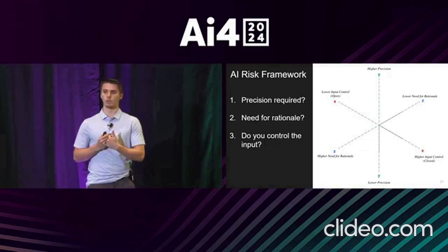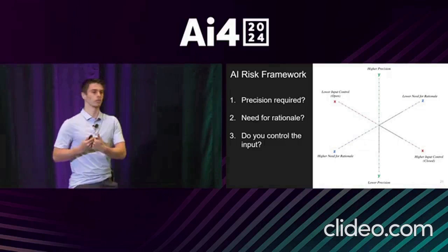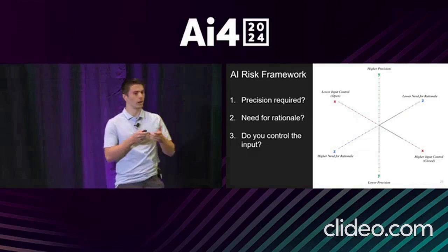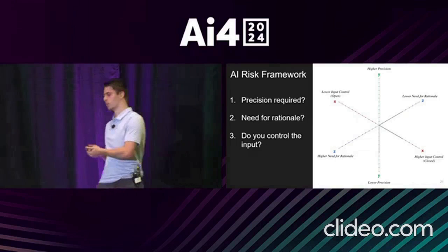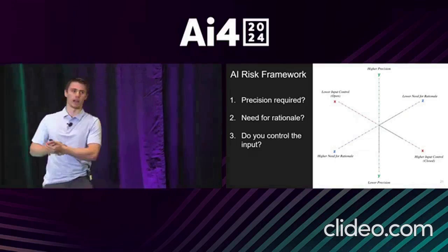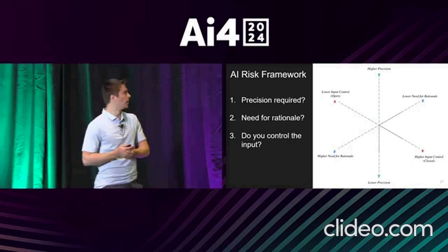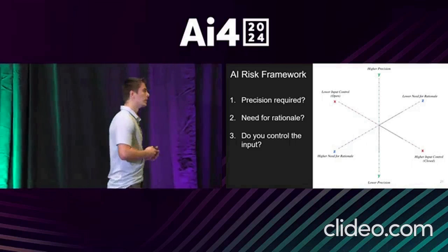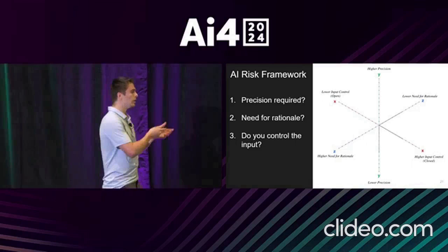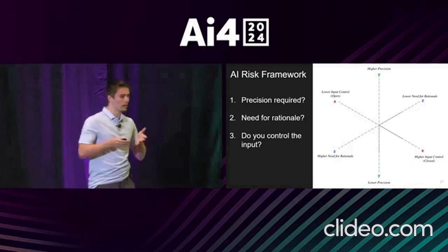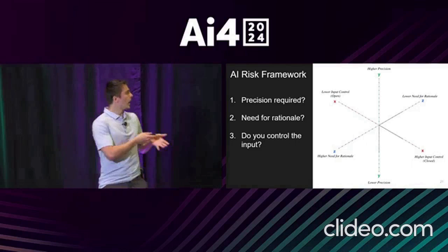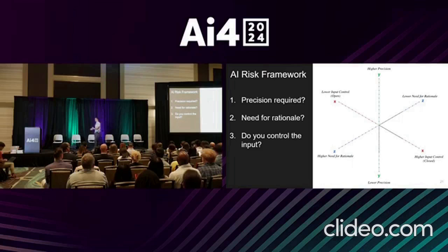Given the bizarre nature of AI, how do we decide when are the good use cases and when are the bad use cases? In our book, The AI Conundrum, we developed this risk framework. It has three axes which correspond to three basic questions you should ask when applying AI: how much precision do you need in your use case, how strongly do you need rationale — how much do you need to understand what the AI is doing — and how much do you control the input, meaning are you in an open or closed environment?